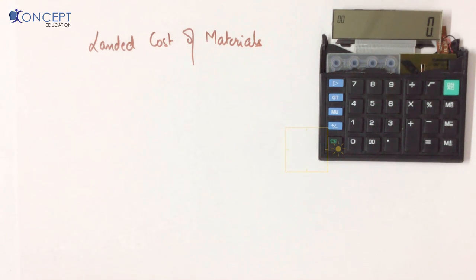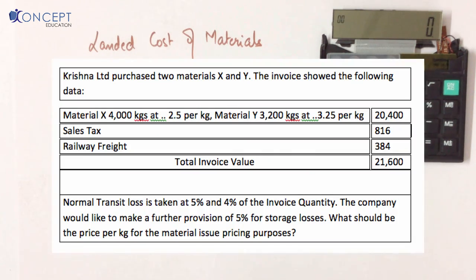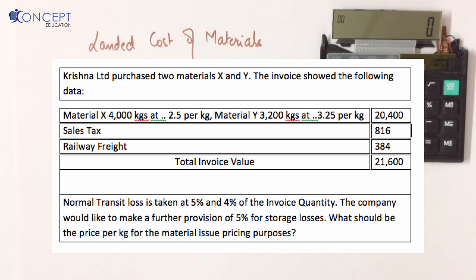In this video we will be learning the landed cost of materials. The best way to learn it is to look at an example. A company purchased two materials X and Y, and the bill made shows that the total invoice value is 21,600.